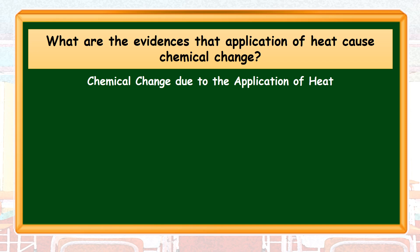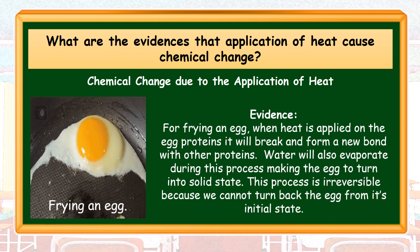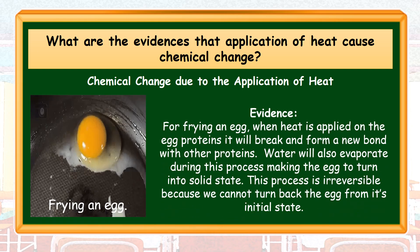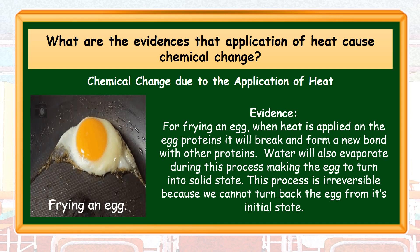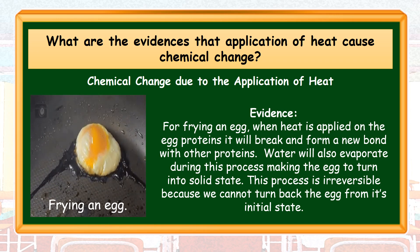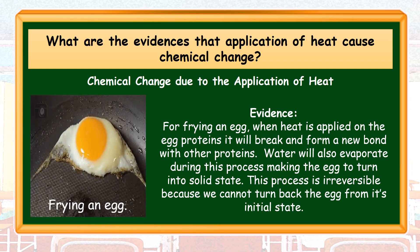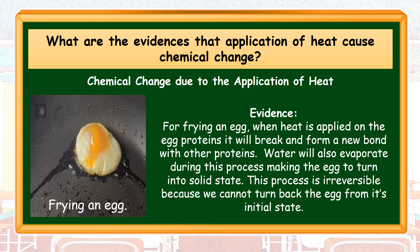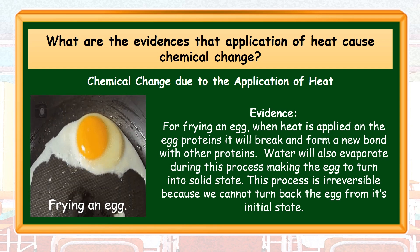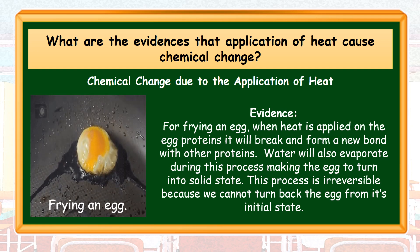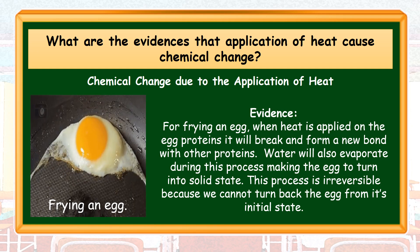Here are the evidences that application of heat causes chemical change in a material. For frying an egg, when heat is applied on the egg proteins, it will break down and form a new bond with other proteins. Water will also evaporate during this process, making the egg turn into solid state. This process is irreversible because we cannot turn back the egg from its initial state.